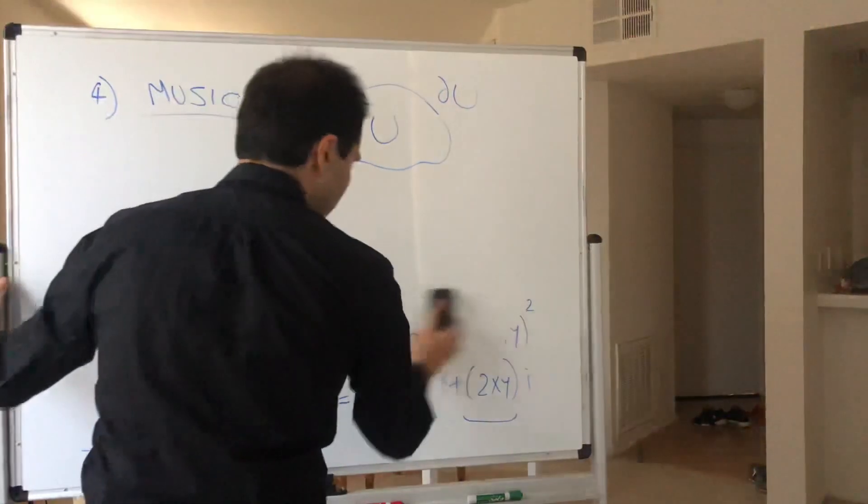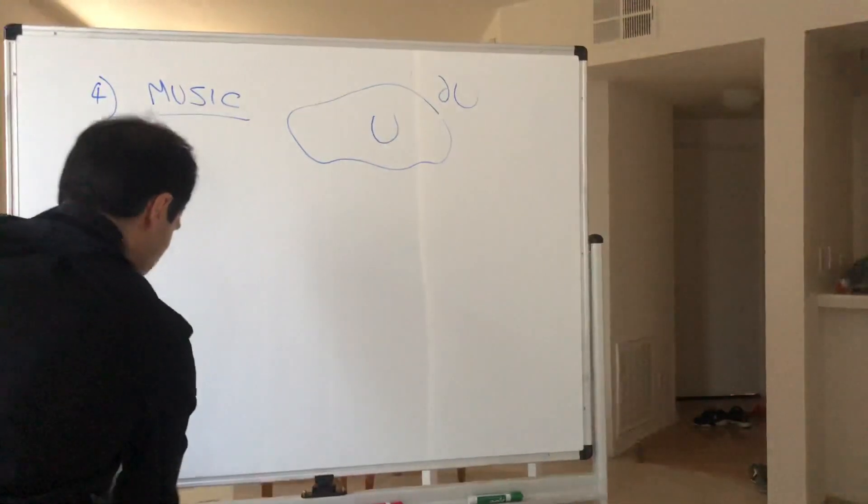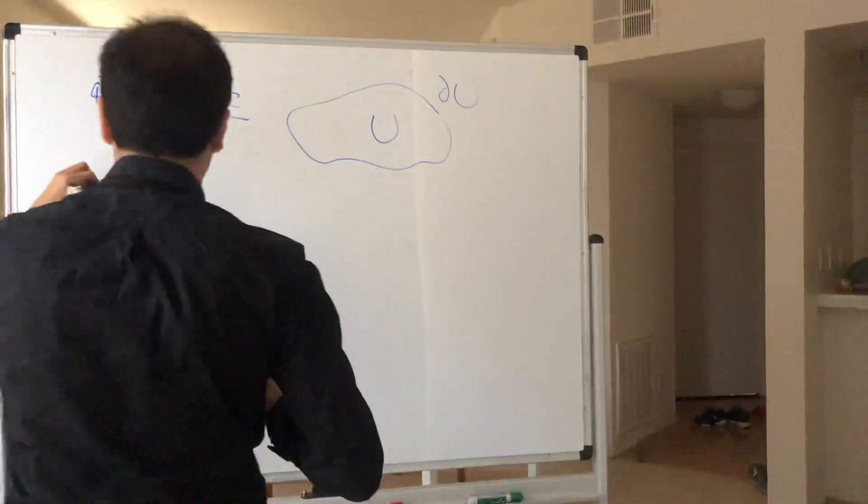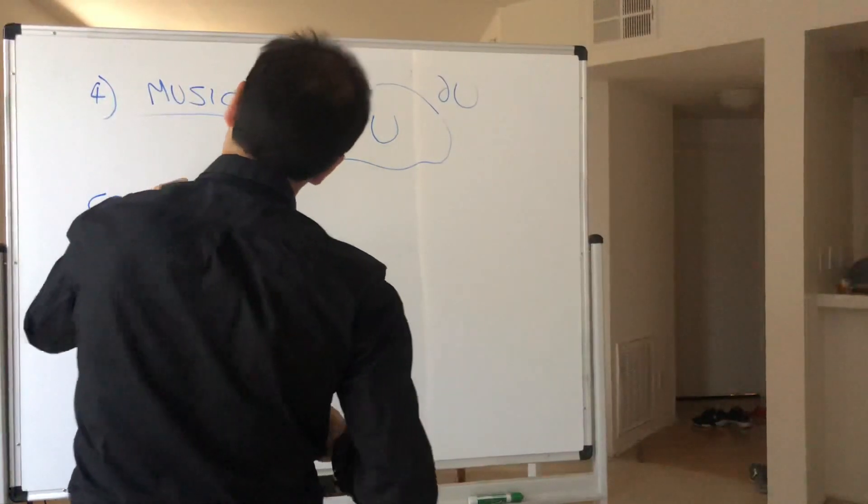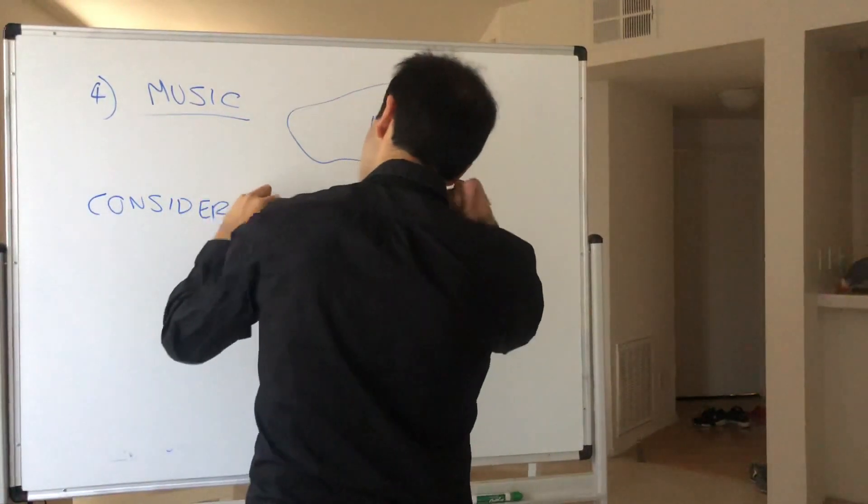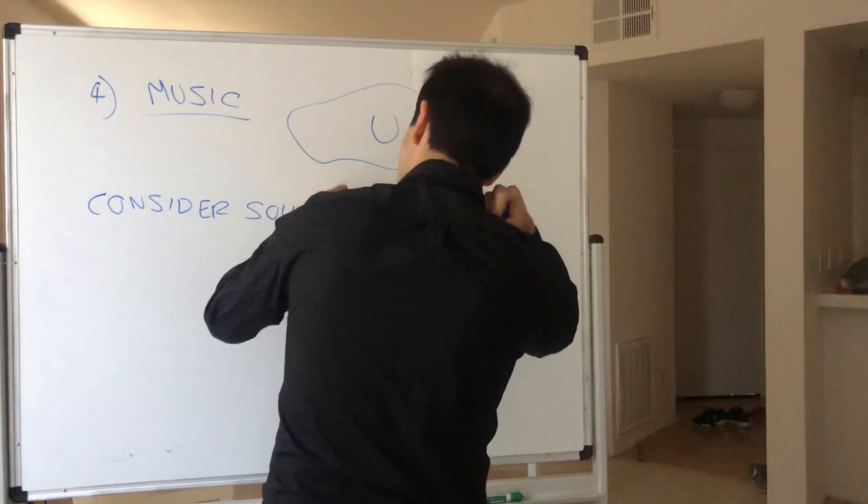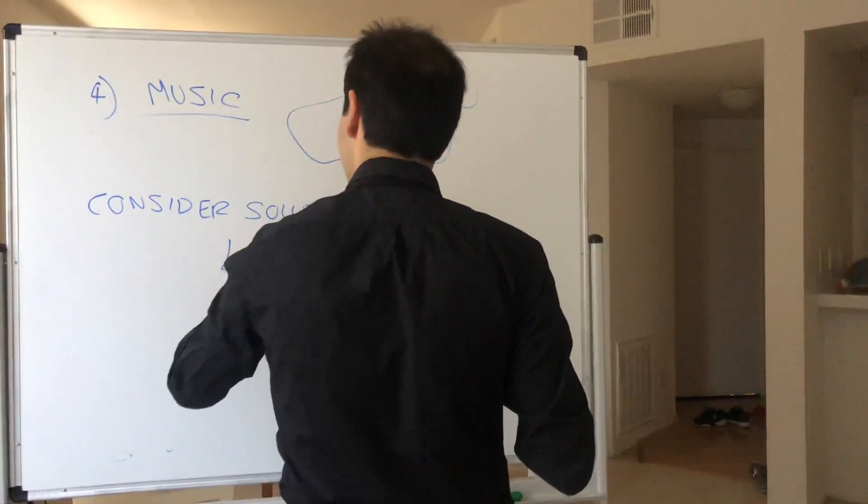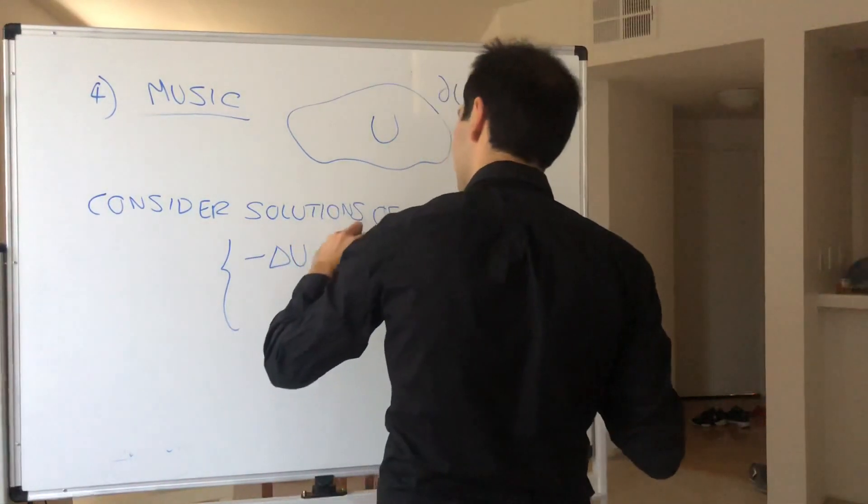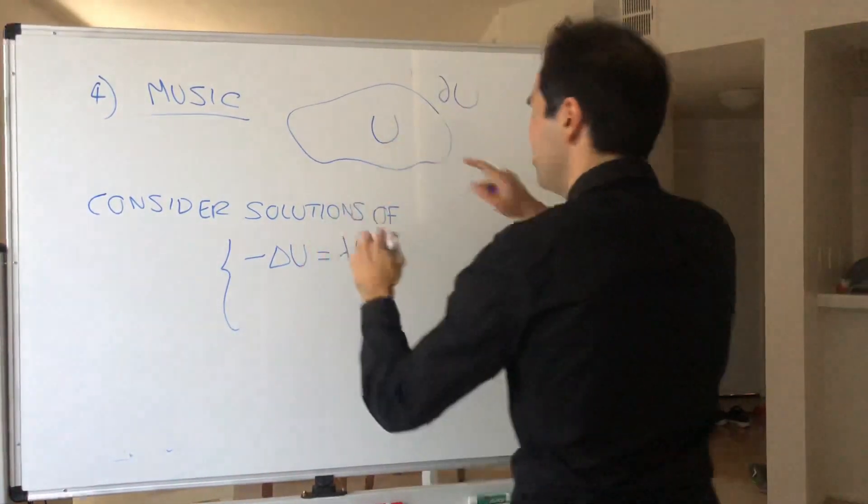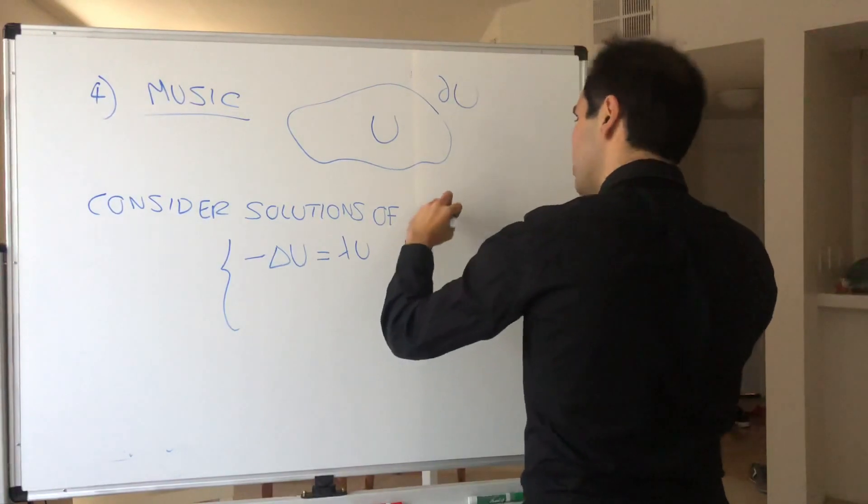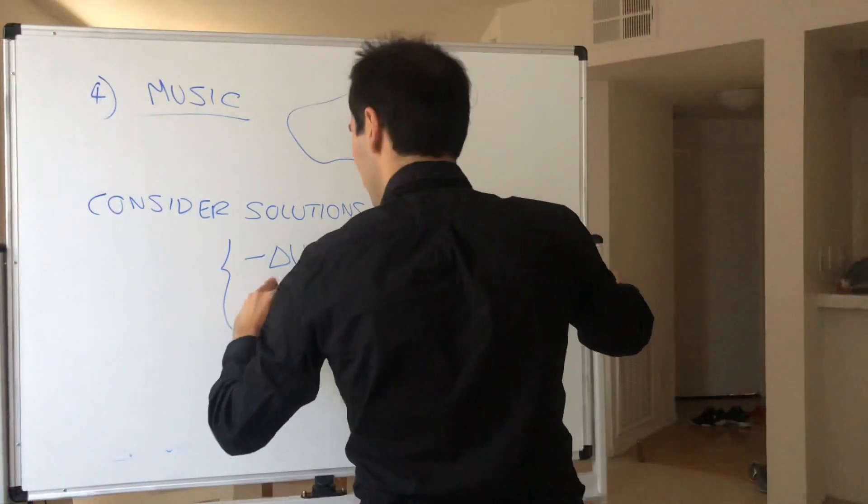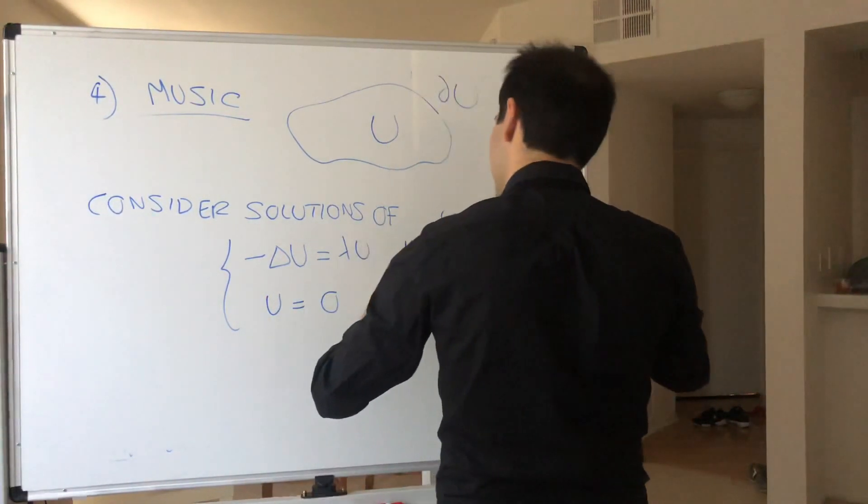And consider the following solutions of minus Laplacian of u equals lambda u. Again, this is small u and this is capital U. So in u and u equals zero on the boundary.